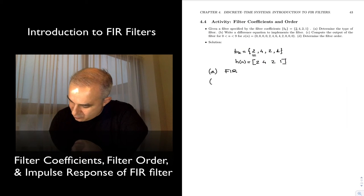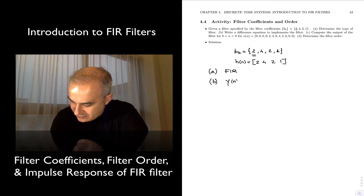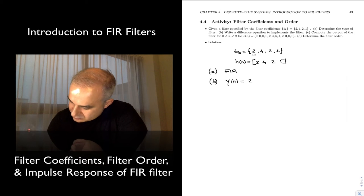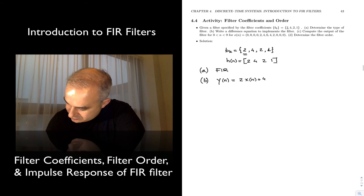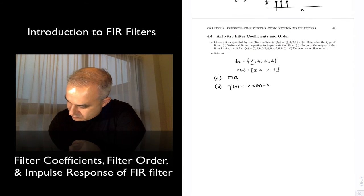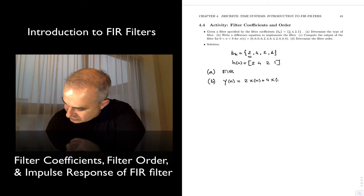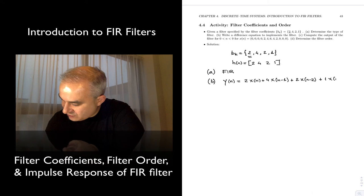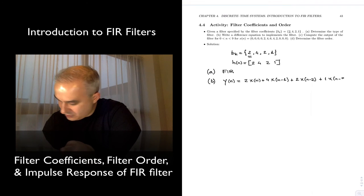Part B: write the difference equation. Y of n in this case will be 2 times x of n, plus 4 times x of n minus 1, plus 2 times x of n minus 2, plus 1 times x of n minus 3.